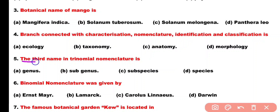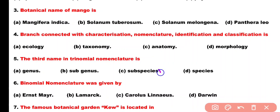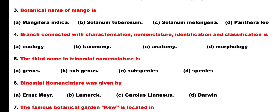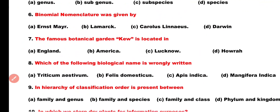Question number 5. The third name in trinomial nomenclature is: Option A: Genus, Option B: Subgenus, Option C: Subspecies, Option D: Species. Correct answer is Option C. In trinomial nomenclature, the third name is Subspecies.